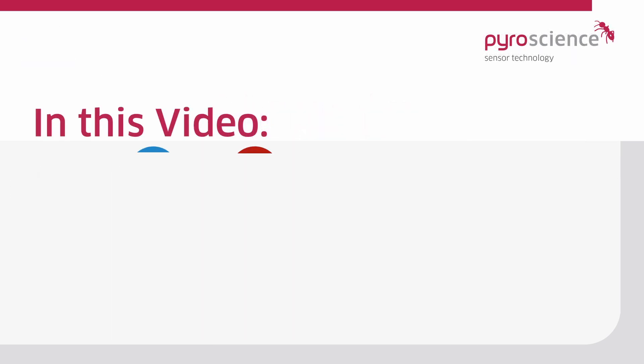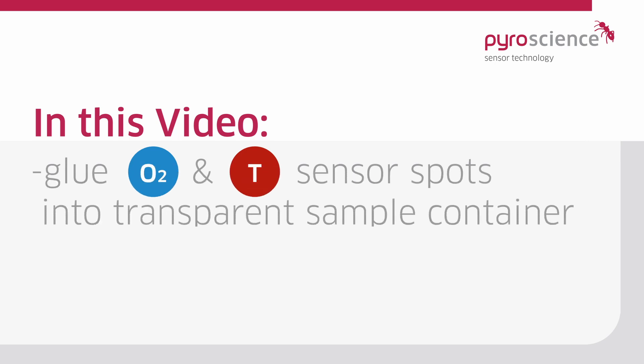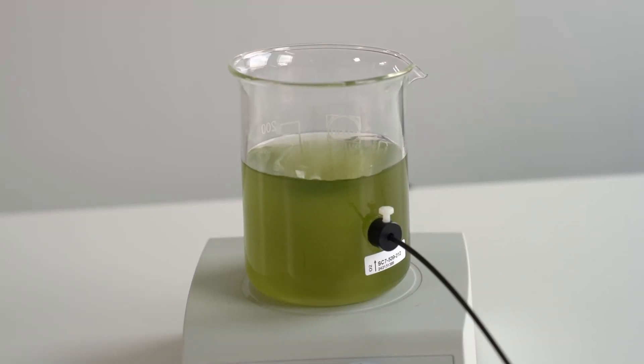In this video guide we are going to show you how to properly glue oxygen and temperature sensor spots into transparent sample containers using silicone glue. Follow these steps for an ideally fixed sensor spot in your setup ready for your measurements.